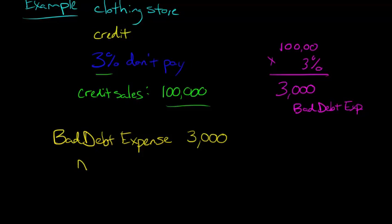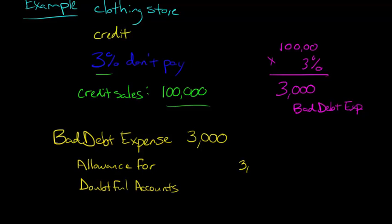And then what are we going to credit? We're going to credit this account called Allowance for Doubtful Accounts. This is a contra account that's actually going to reduce — it's going to be a credit.